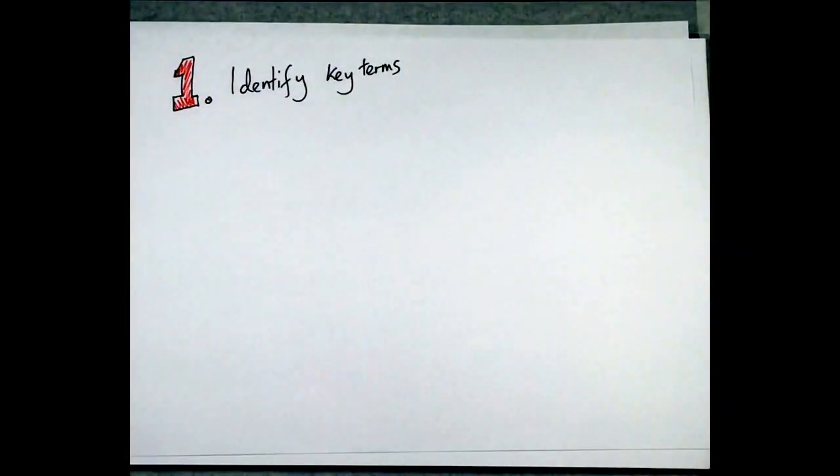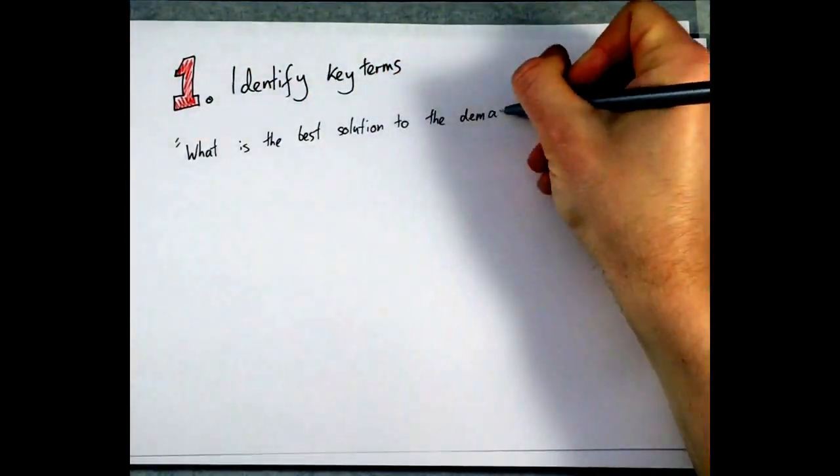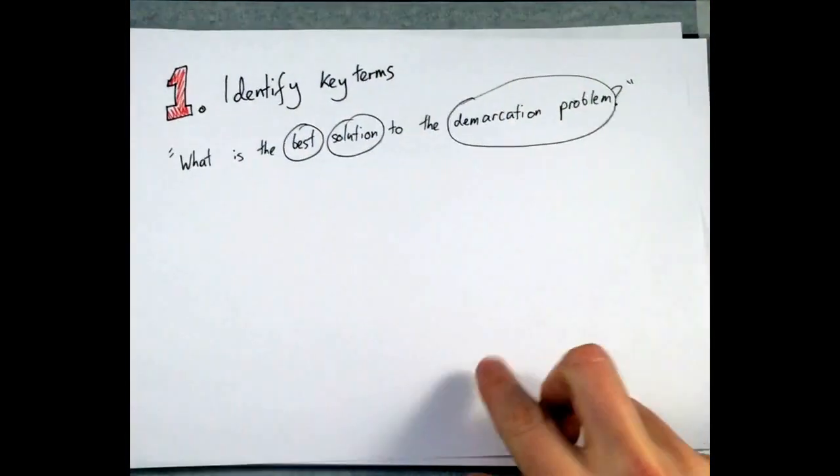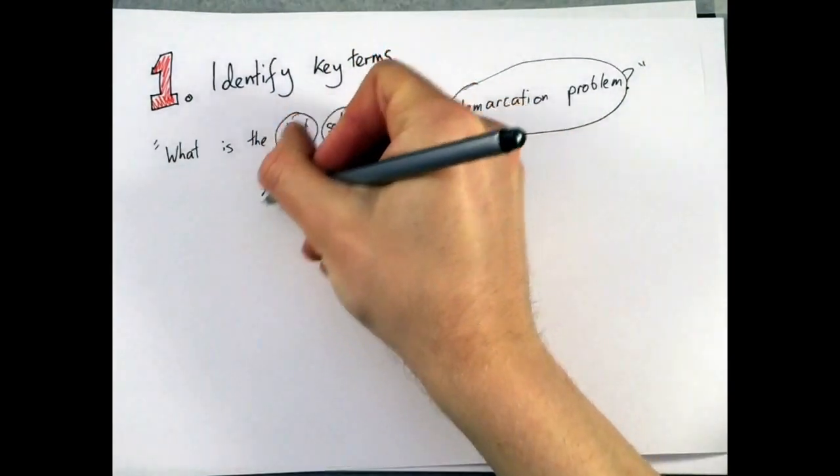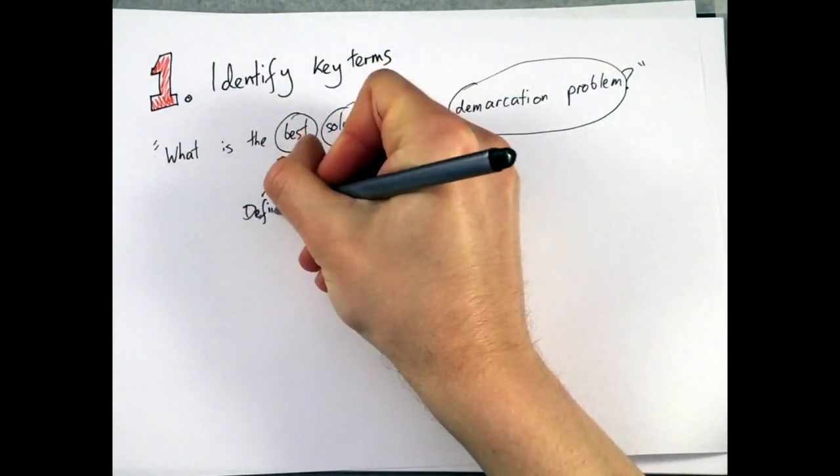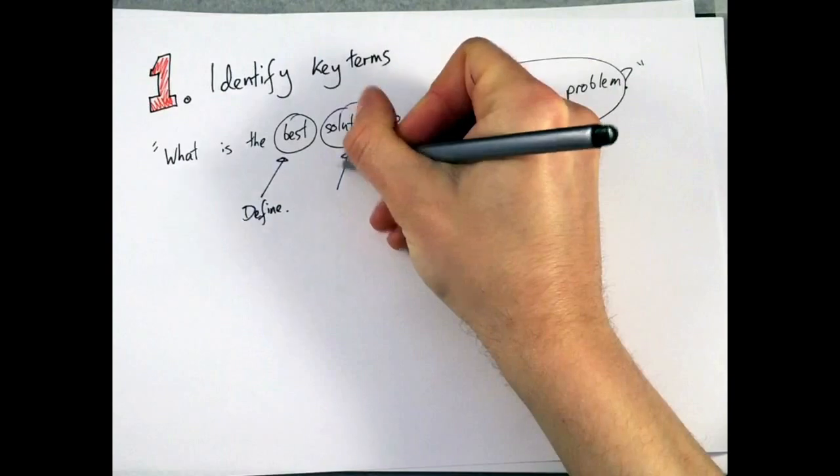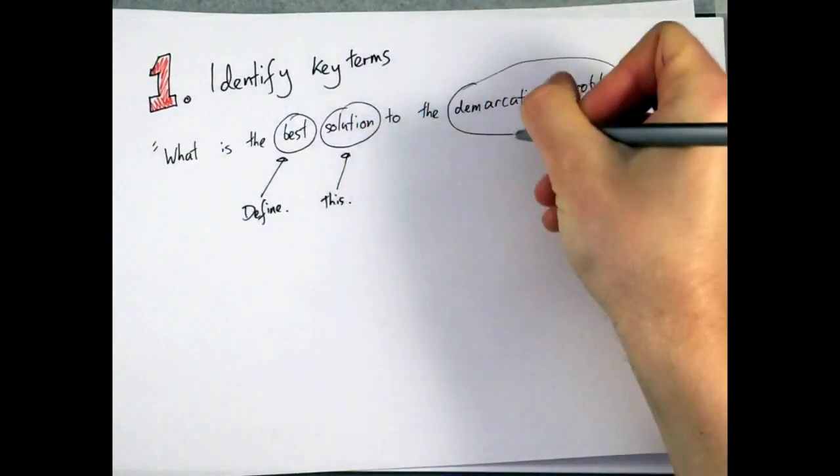First, you're going to want to identify the key terms in the question. If the question is, what is the best solution to the demarcation problem, identify what you think the examiner means by the terms solution and demarcation problem. How are you going to define and operationalize those terms in your essay?